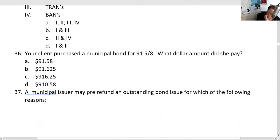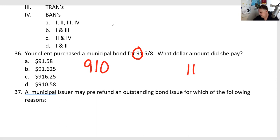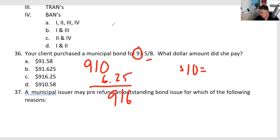Corporate and muni bonds trade in fractions — you need to convert those to dollars. One way: 91 is easy — that's 91% of par ($1,000), so $910. Then for the fraction: a bond point is $10, so think of five-eighths as five-eighths of $10. Five-eighths of $10 is $6.25. So the bond price is $910 + $6.25 = $916.25. This bond is trading at a discount, meaning interest rates have gone up since the bond was issued, causing the bond to fall below par.